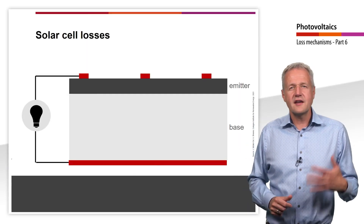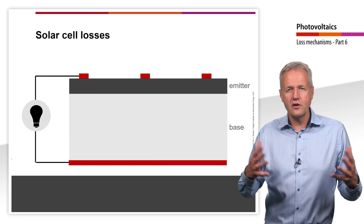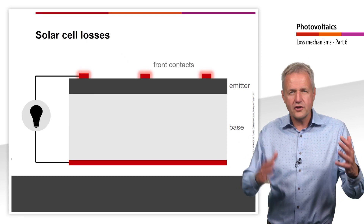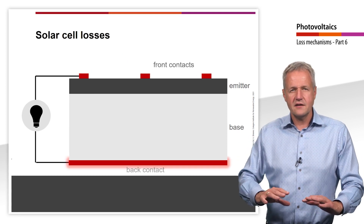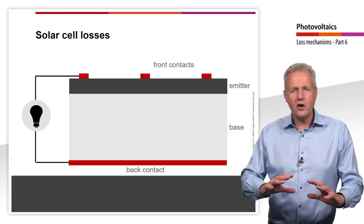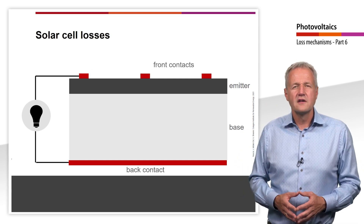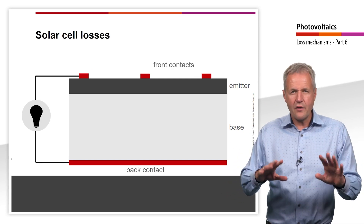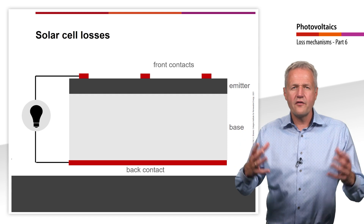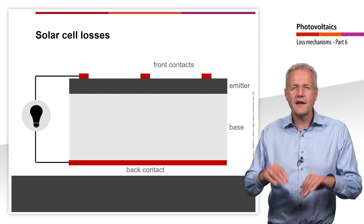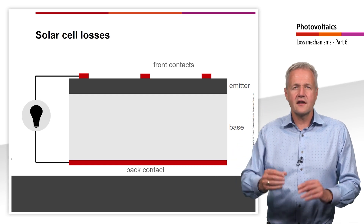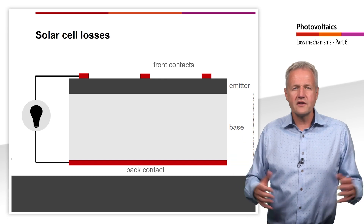First, let's take a look at what a finished solar cell actually looks like. We see the p-n junction of a solar cell with front contacts at the top and rear contact at the bottom. The p-type area is on the bottom and the n-type area is on the top, though there are also solar cells built the other way around. This structure corresponds to today's standard. The n-layer is referred to as the emitter and the p-layer as the base. The base is significantly thicker than the emitter, and we'll deal with the reason for that later.